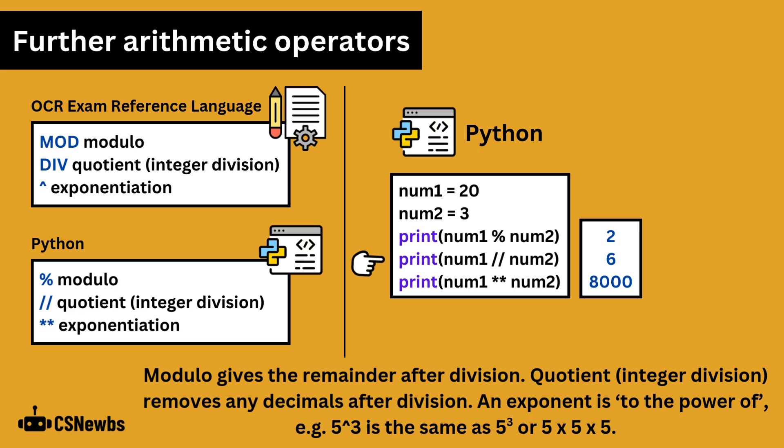20 integer division 3 is 6. 20 divided by 3 is 6.6666 recurring. Remove the decimal and you are left with just the integer 6. Finally, with exponentiation, 20 star sign star sign 3 is the same as 20 to the power of 3, which is the same as 20 times 20 times 20, which is 8,000.